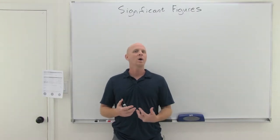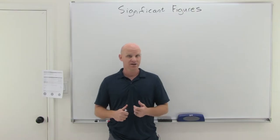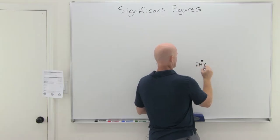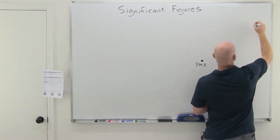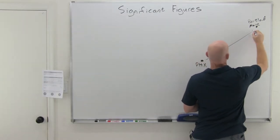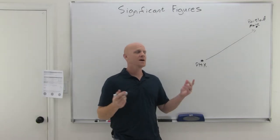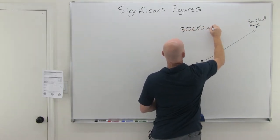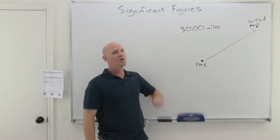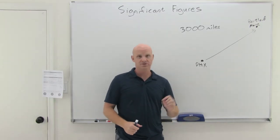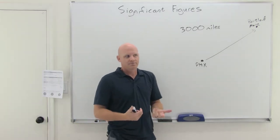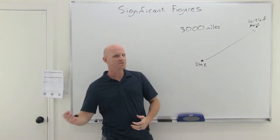Significant figures deal with how well do we really know a number — how precisely do we really know a number? Let's say I'm here in Phoenix, Arizona, and I've got my friend up in Portland, Maine. Somebody asks me, how far is it to your friend up in Portland, Maine? And I say, it's about 3,000 miles. That's a pretty rounded number. Is it exactly 3,000 miles, or is it give or take? Well, if I had to round it to the nearest thousand, it'd be about 3,000 miles. That's a better approximation than 2,000 or 4,000, but it's not that exact.